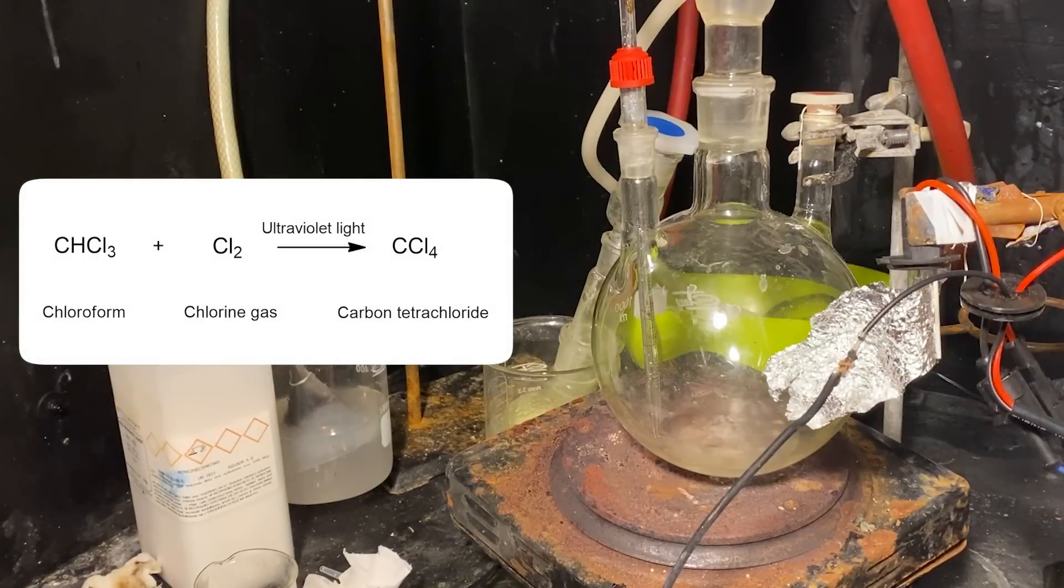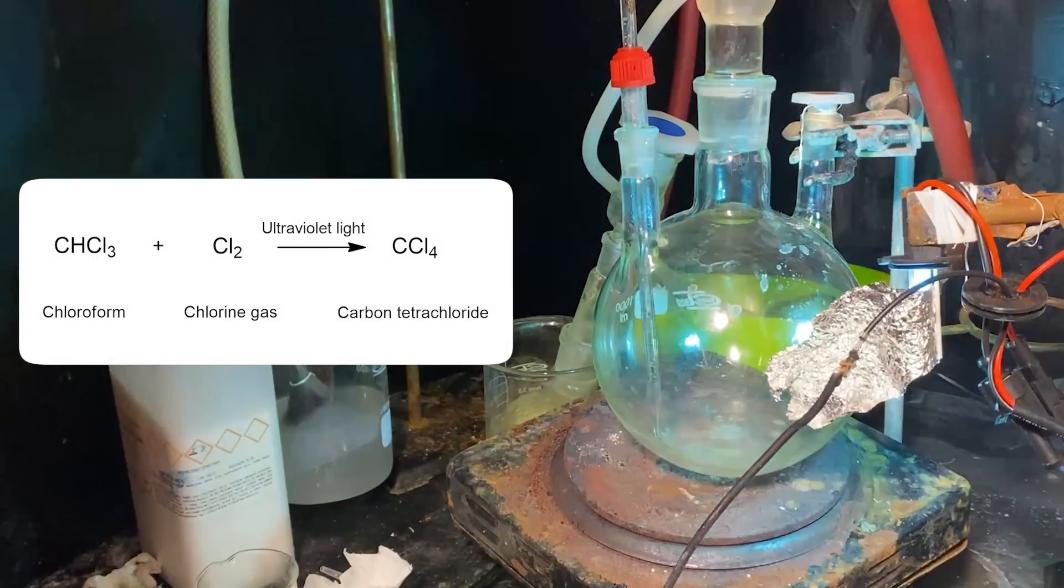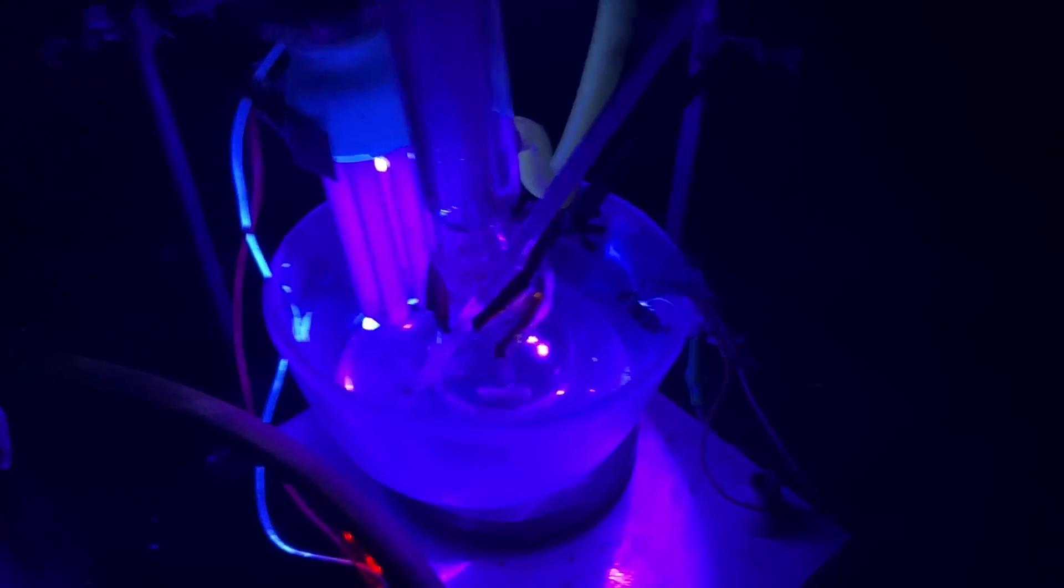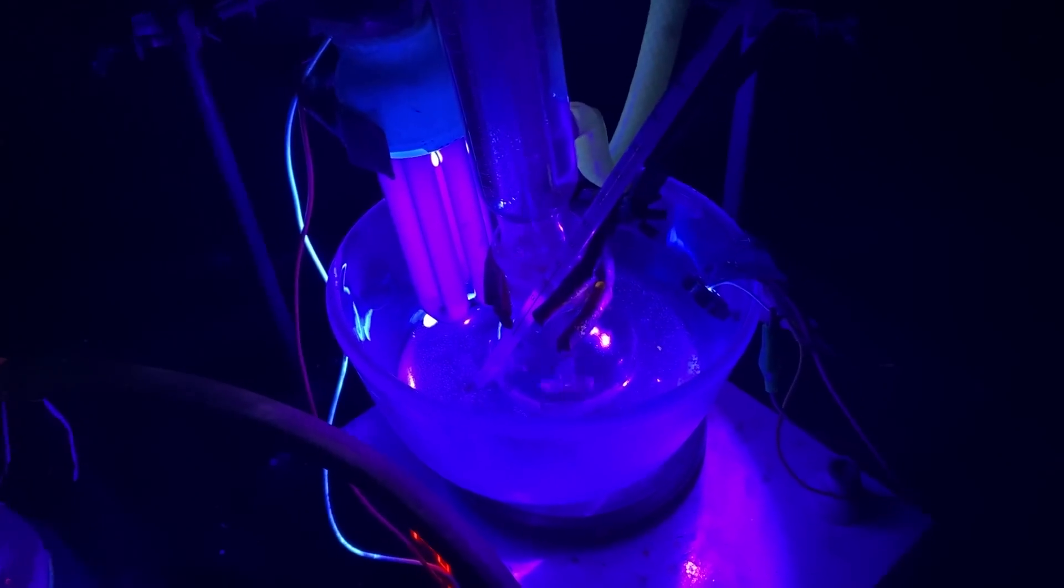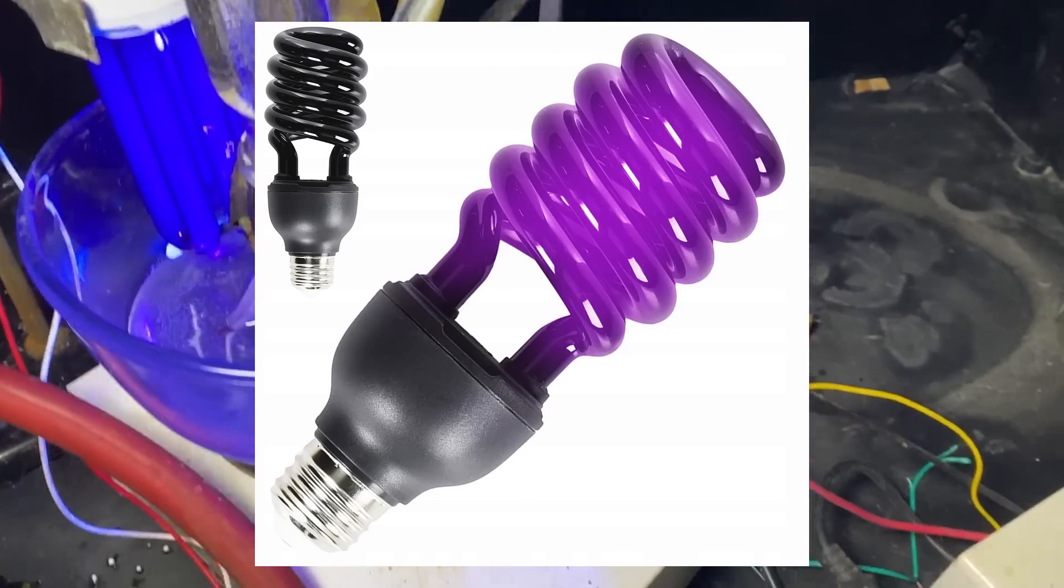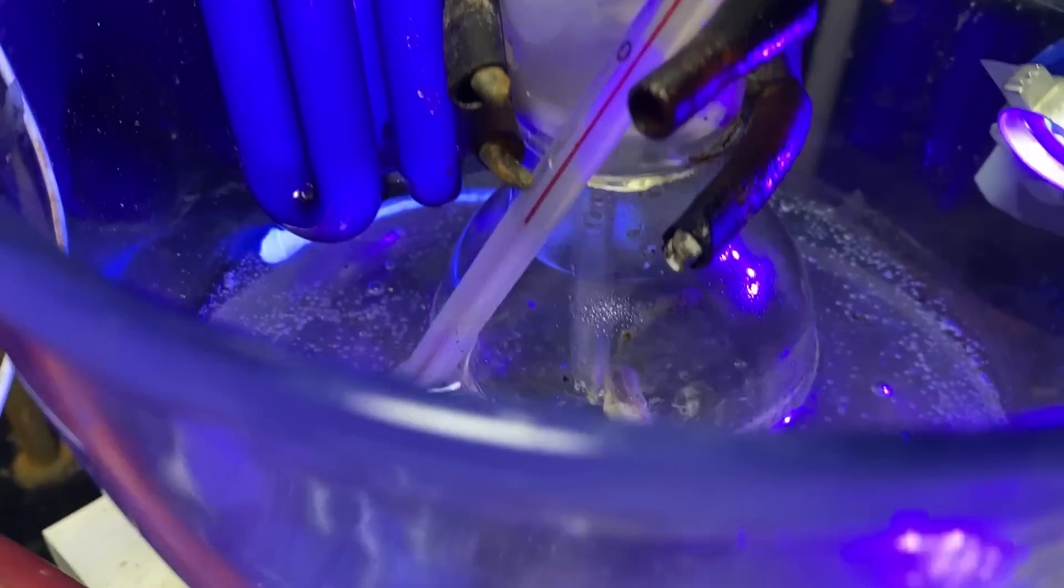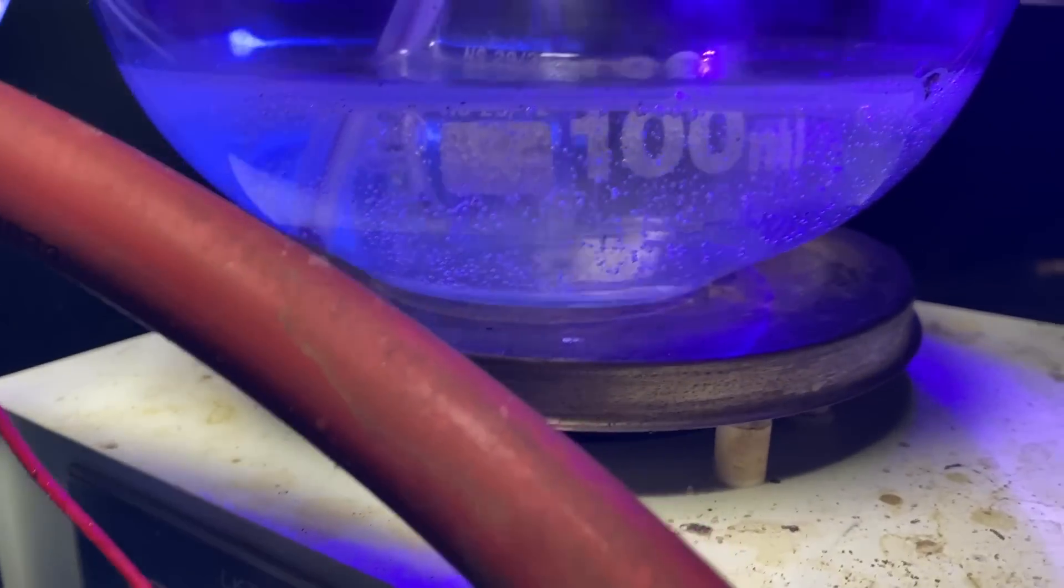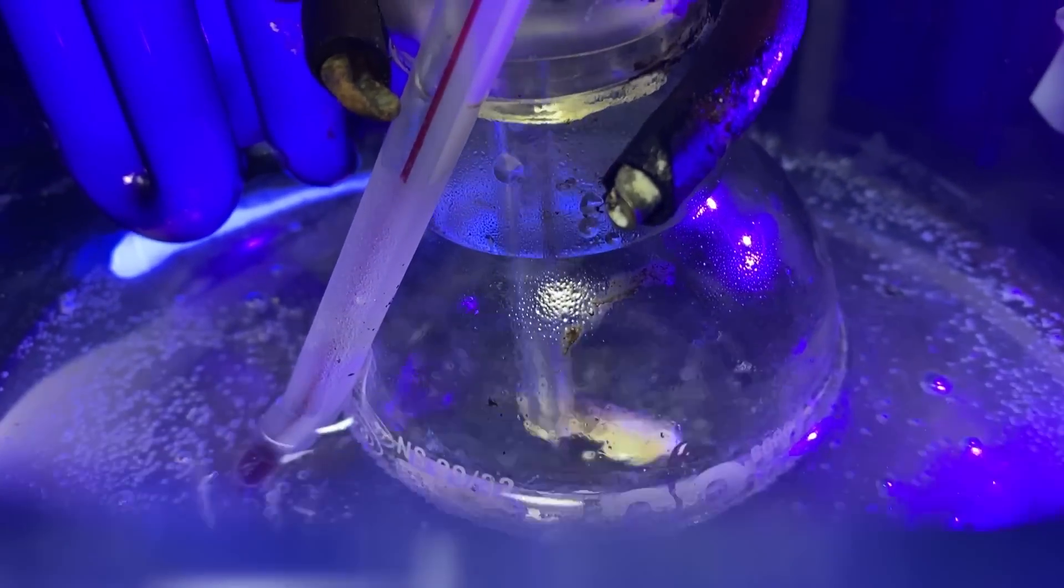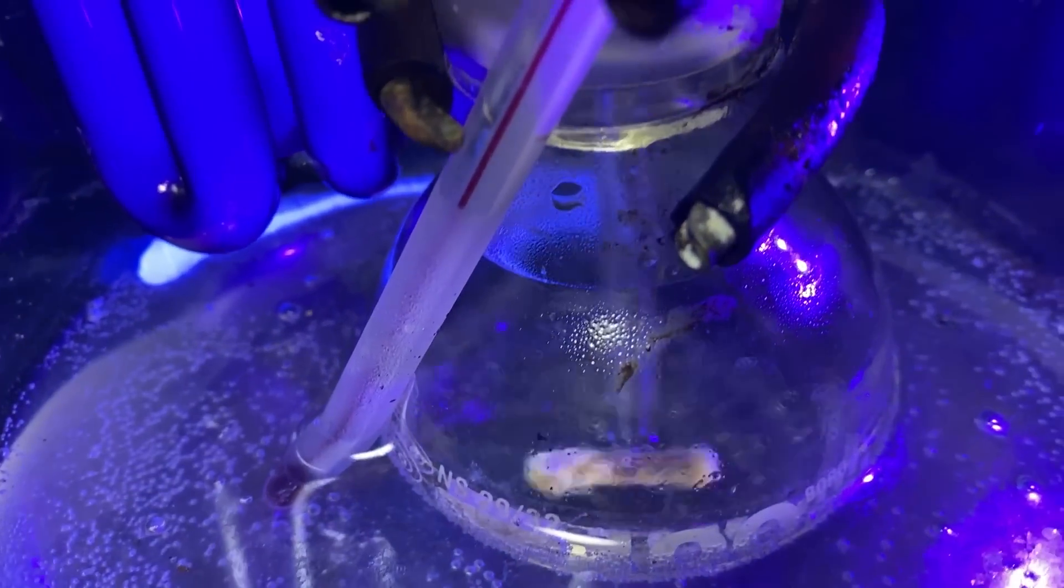The conversion of chloroform to carbon tetrachloride is very simple. All you have to do is pass chlorine gas through chloroform while it is being irradiated by UV light. This process is known as photolytic chlorination. And as the name suggests, you need a strong UV source and this is pretty much why my first attempt at making carbon tet failed. In a nutshell, it was because of those shitty UV lamps, which are pretty much just normal incandescent lights but with a purple filter that outputs extremely low amounts of UV radiation.